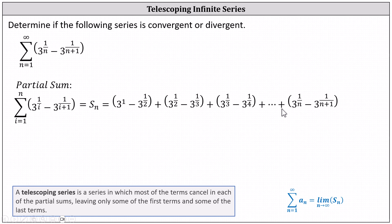Notice the last value for i in the partial sum is n. When i equals n, we have 3 to the power of 1 divided by n minus 3 to the power of 1 divided by the quantity n plus 1. And now to analyze the terms in the series.